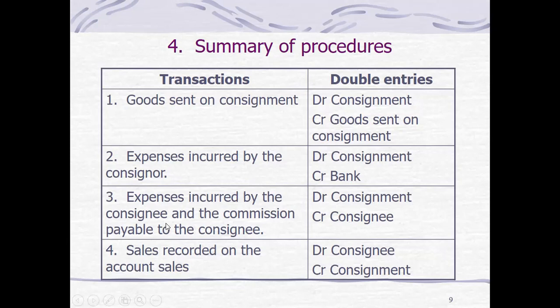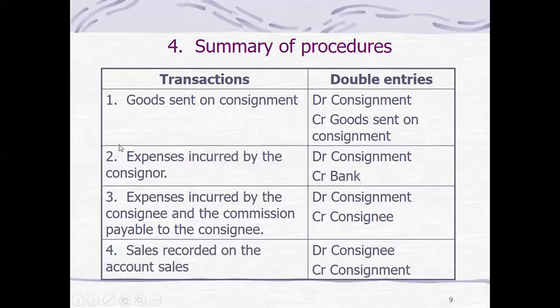For expenses incurred by the consignee and the commission payable to the consignee: since reimbursable expenses and commission are related to the consignment, they increase the inventory on consignment account on the debit side, and the credit will be the consignee's account — the payable account we set up. This is a credit because any expenses and commission will be deducted from the total sales made by the consignee to get the net proceeds or remittance to be given to the consignor.